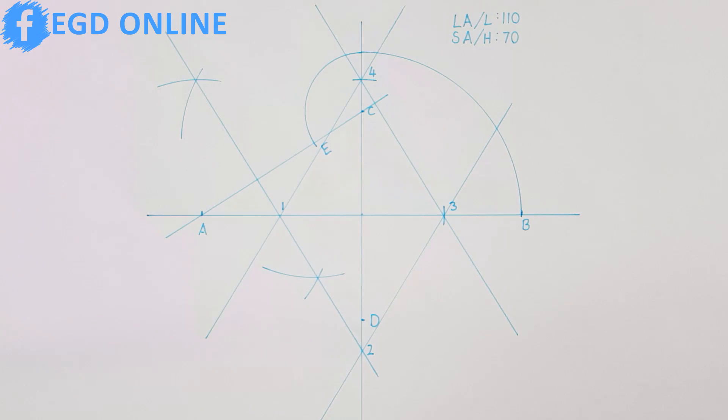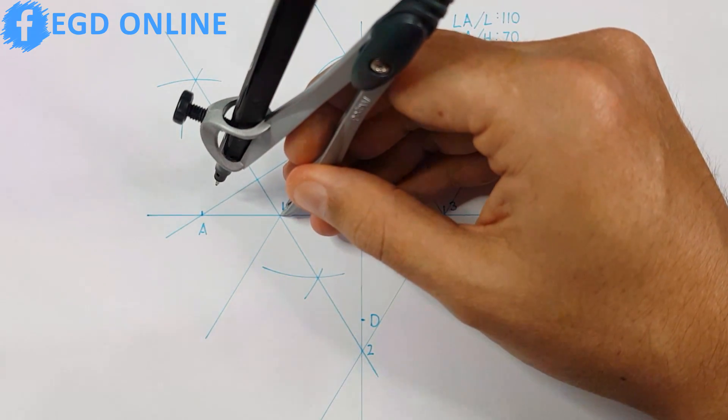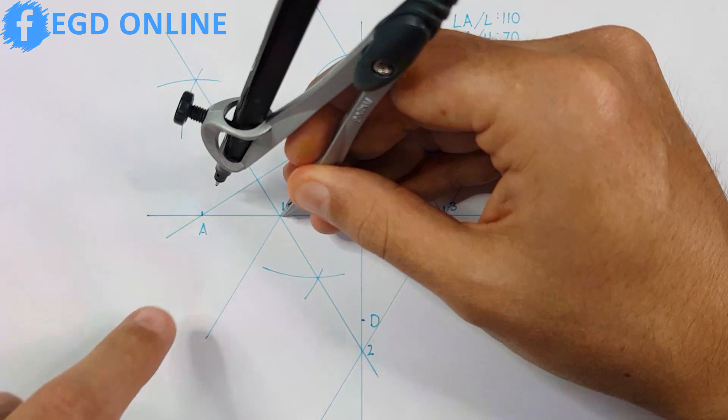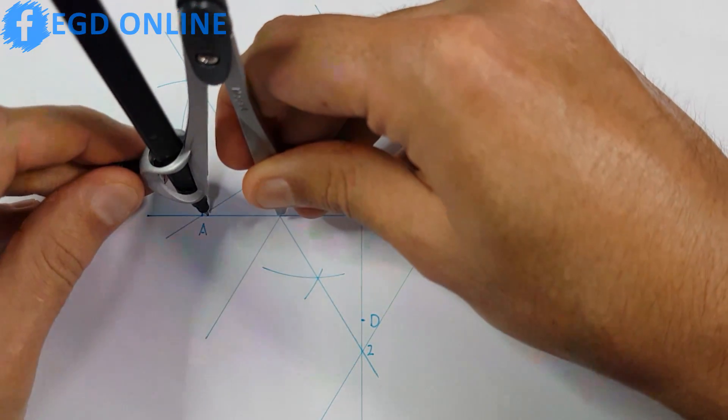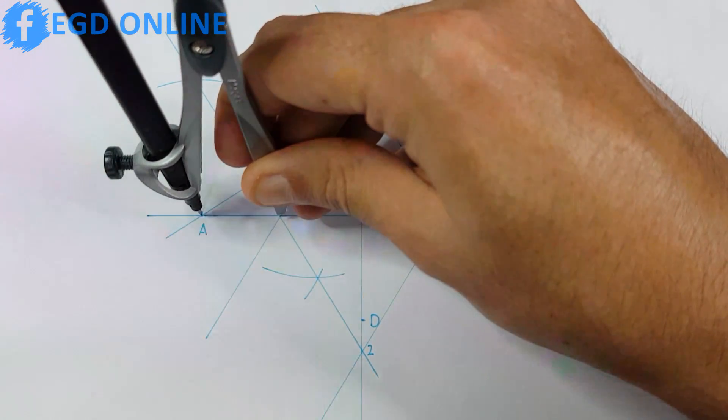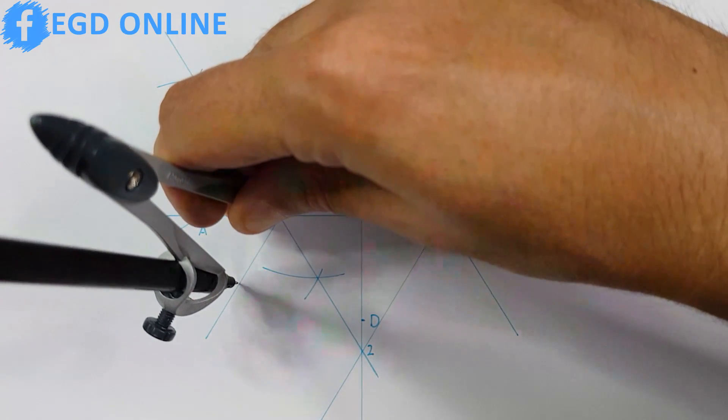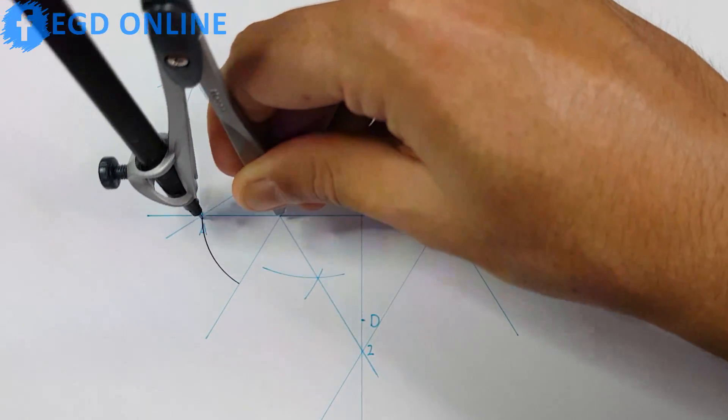Now to start drawing my ellipse I need to place my compass on point 1 and adjust it to point A. Note that you have to use the line 1 and 4 and also 1 and 2 as your limitations to your circle.